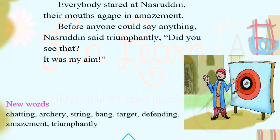New words from the story: 'chatting' means informal talk; 'string' means to prepare a bow; 'archery' is shooting with a bow and arrow; 'defending' means protecting oneself from attack; 'target' is the goal intended to be hit; 'triumphantly' means happily and proudly; 'amazement' means greatly surprised.